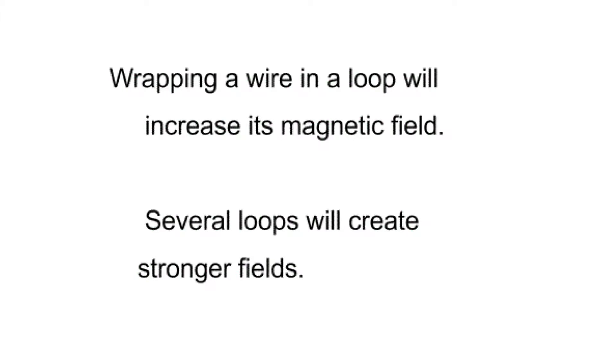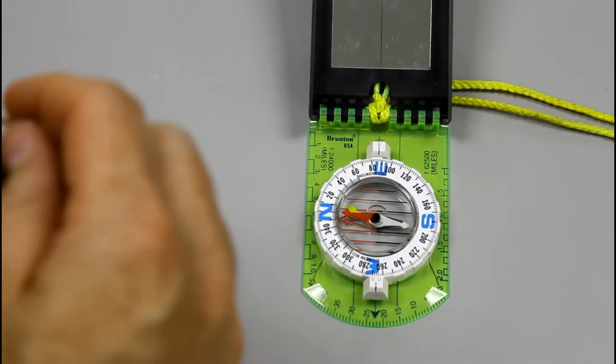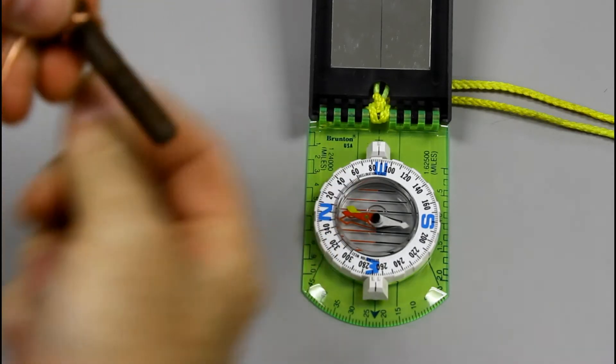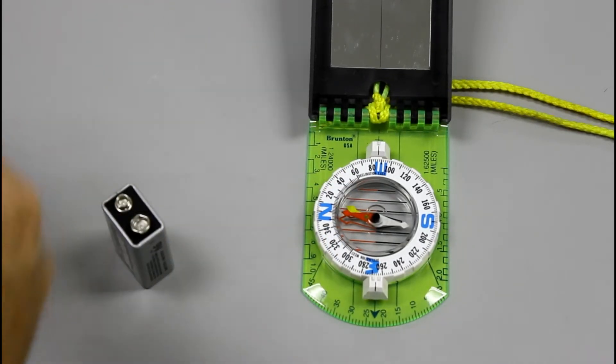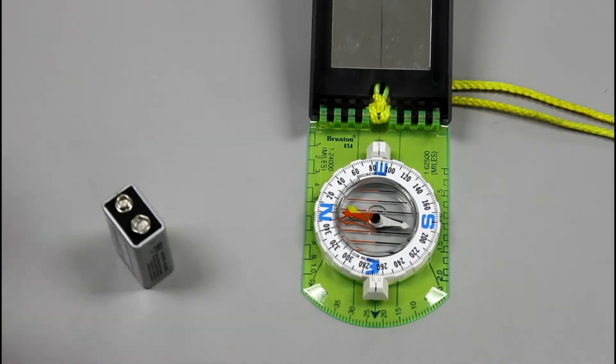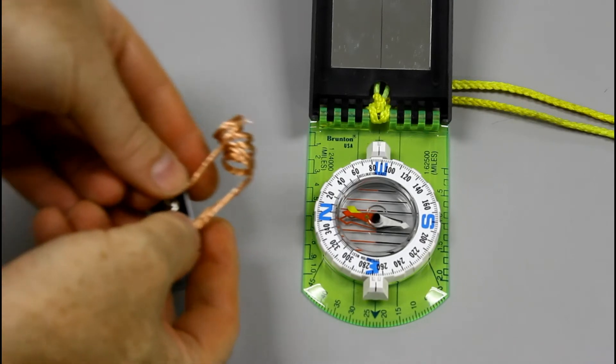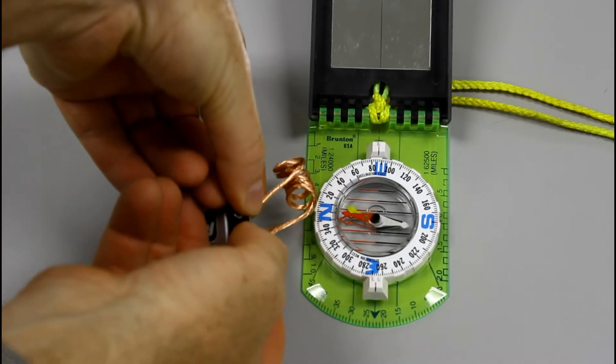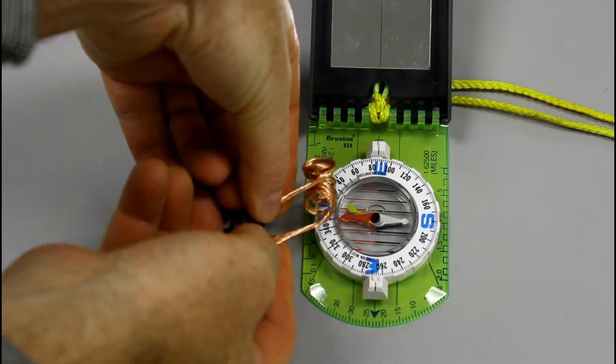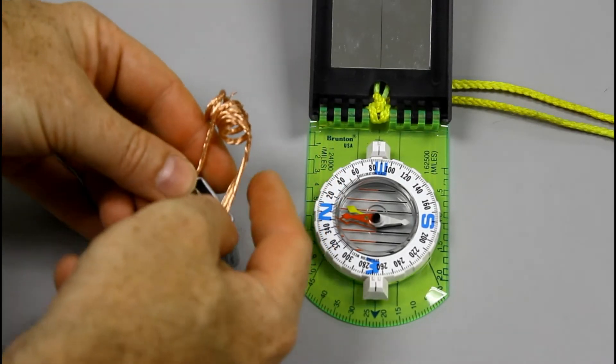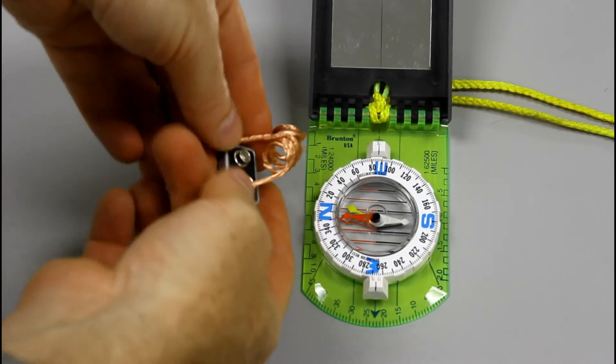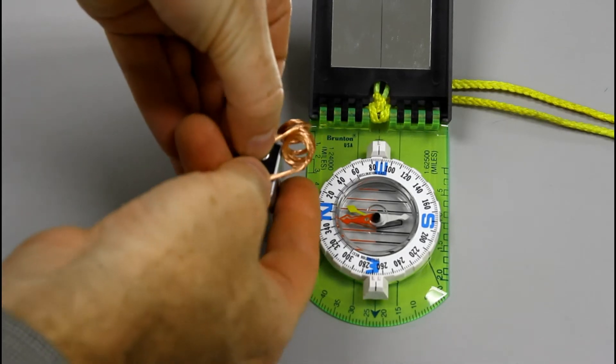Wrapping a wire in a loop will increase its magnetic field. Several loops will create stronger fields. I'm then going to form it into a coil. And now I want you to see that when I put this on the battery, it has more effect on the needle. Not a lot more, but it does have more effect on it.